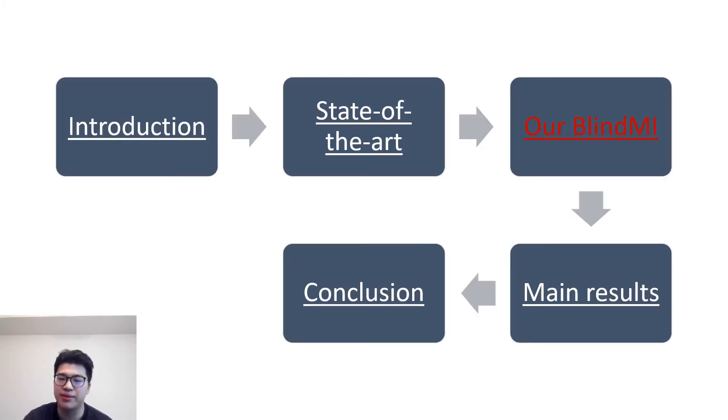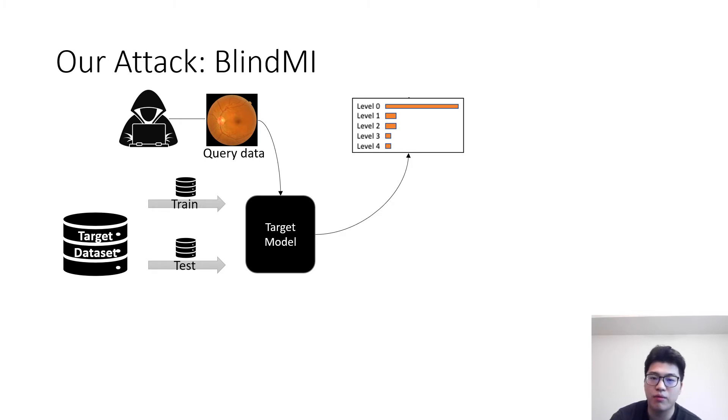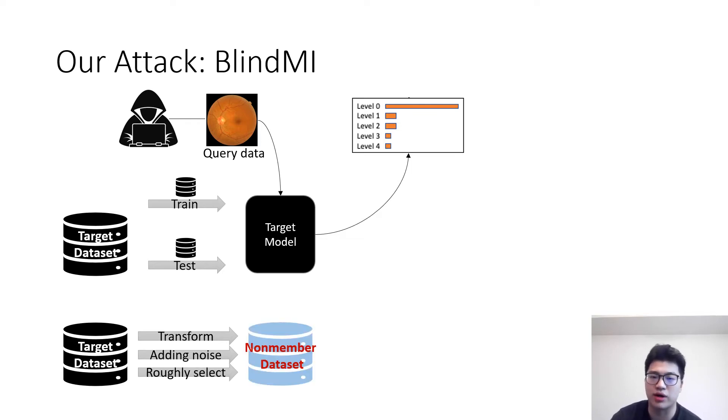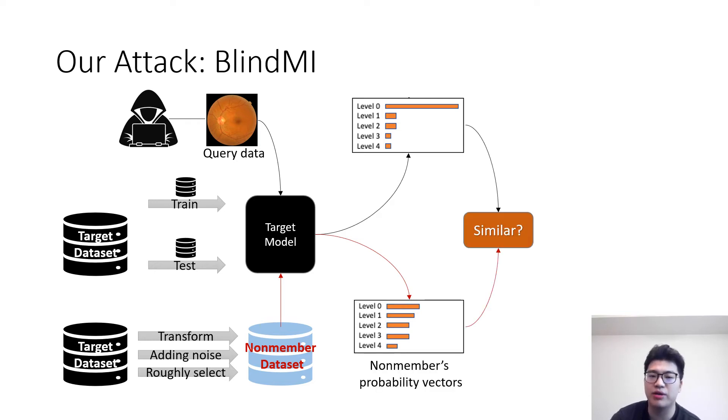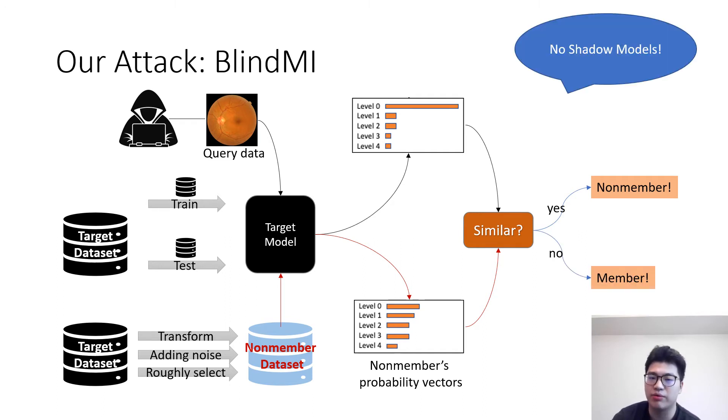And then we come to our design part. Our attack is called BlindMI because it doesn't need the information of the target model. What we need to do is to modify the target data set. For example, using Sobel operator as the transformation or adding noise or roughly selected samples with low probability score. Then we get a data set different from the target set, which we call the non-member data set, because they're unseen data for the target model. Then we query the target model using our non-member data set and get the output vectors. If a sample from the target set is similar with our non-member, then we see it is also non-member. If they are not similar, we think it is a member. By doing this, we avoid using shadow models during our attack.